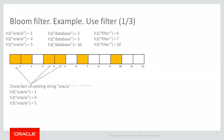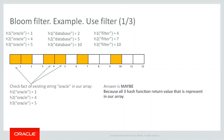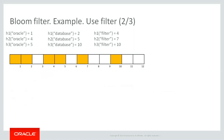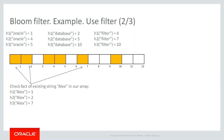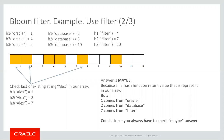To check if 'oracle' is in our array, I get values 1, 4, 5 — three of three matching — which tells me oracle maybe exists in this data set. But if I check 'alex,' the answer is also 'maybe' because I again get three of three matching, though the bits were set by different words: one from 'oracle,' one from 'database,' one from 'filter.' When we get a 'maybe' answer, we have to do an exact recheck.